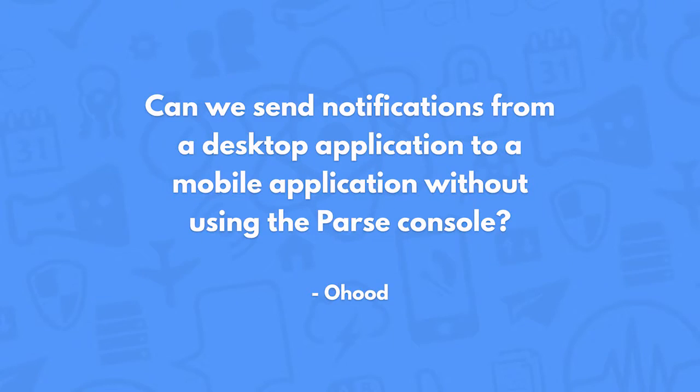Can we send notifications from a desktop application to a mobile application without using the Parse console? You can definitely do it, and there are basically two approaches. If you want to use the SDK — say on OS X or in JavaScript on the web — you can enable client push in the settings on your Parse app and just use the SDK to send those notifications. The other approach, which is way more secure, is to build the same application but instead of using the SDK, use a master key and a REST API.